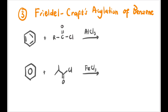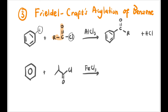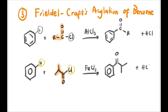Last but not least, Friedel-Crafts acylation of benzene. Benzene reacts with RCOCl (acyl chloride) — the Cl is removed along with an H from benzene, producing HCl as a byproduct, and the benzene attaches to the C=O-R group to give an aromatic ketone. In the next example, similarly, H and Cl are eliminated via substitution, removing HCl, and what remains is the benzene ring attached to C=O and the R group — that is your aromatic ketone. That is how you prepare aromatic ketone from benzene.